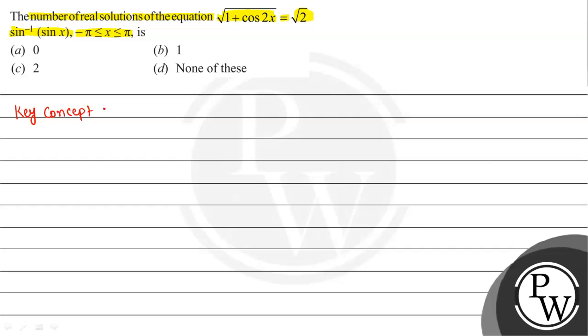The key concepts we will use to solve this question: first, 1 + cos 2θ = 2cos²θ. Second, we should know the graph of y = sin⁻¹(sin x).